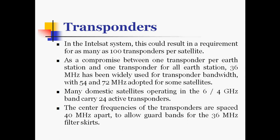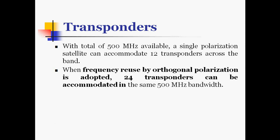As a compromise between one transponder per earth station and one transponder for all earth stations, 36 MHz has been widely used for transponder bandwidth, with 54 and 72 MHz adopted for some satellites. Many domestic satellites operating in the C-band (6 GHz uplink, 4 GHz downlink) carry 24 active transponders with center frequencies spaced 40 MHz apart to allow guard bands for the 36 MHz filters. With 500 MHz total bandwidth, a single polarization satellite can accommodate 12 transponders; with frequency reuse by orthogonal polarization, 24 transponders can be accommodated.